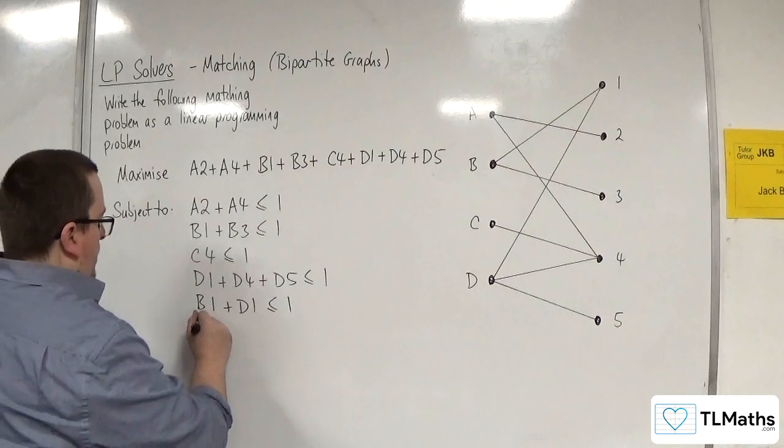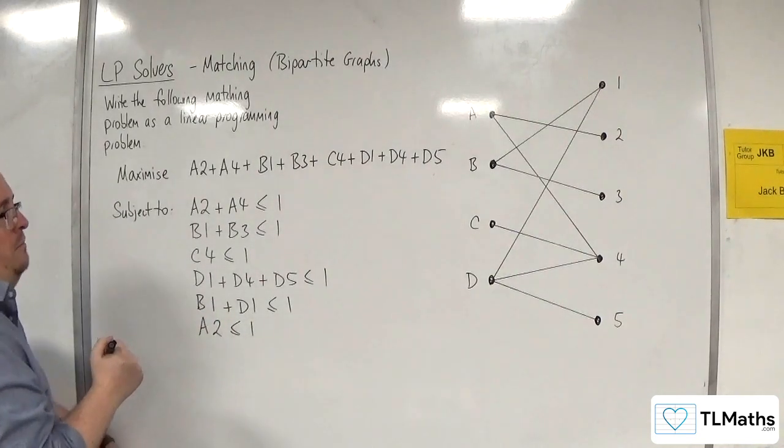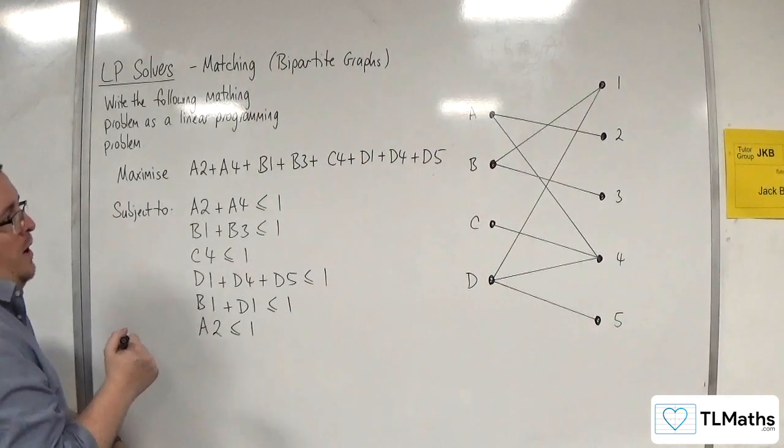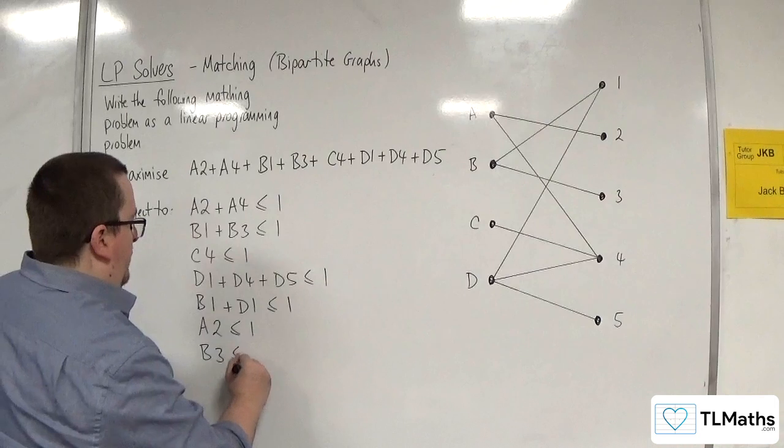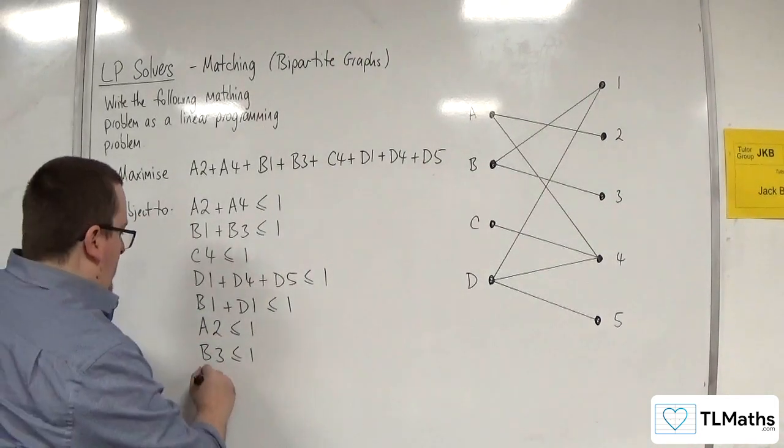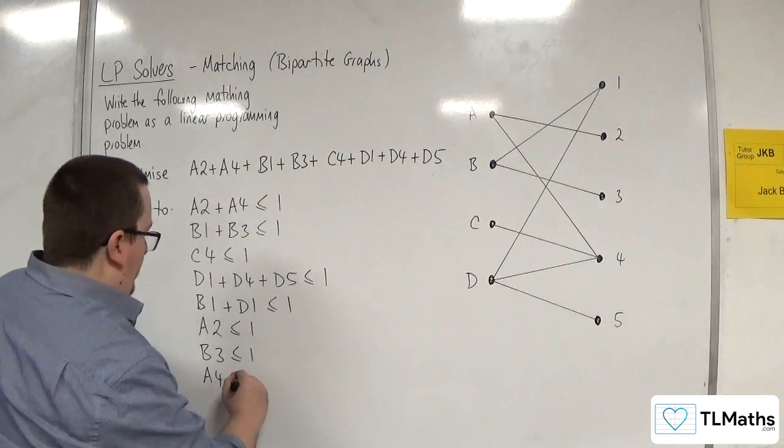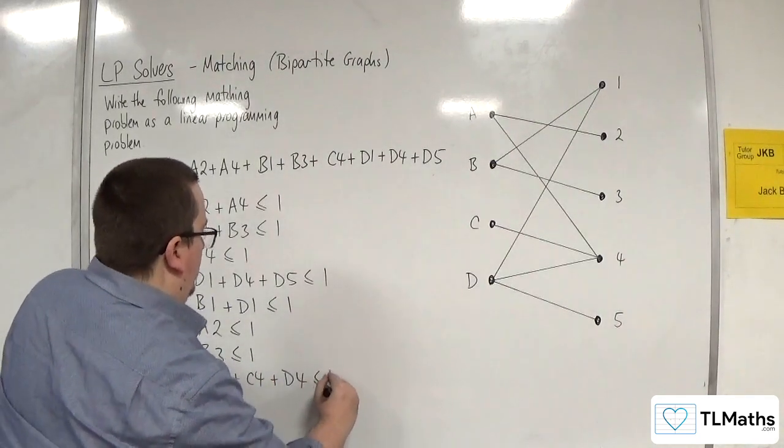Now for job 2, only A can do job 2, so that's got to be less than or equal to 1. There's only one worker that can do job 3, so B3 has got to be less than or equal to 1. For job 4, we can either have A or C or D, so that's got to be less than or equal to 1.